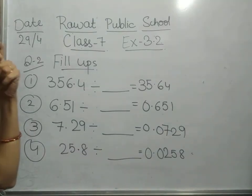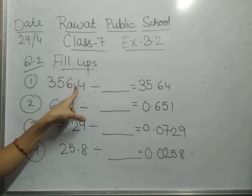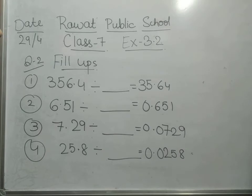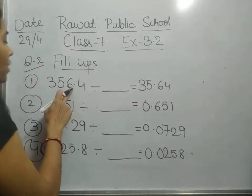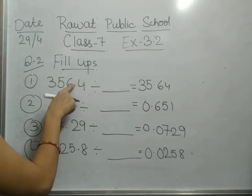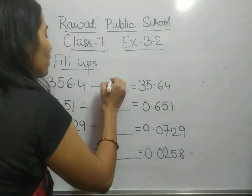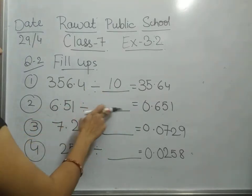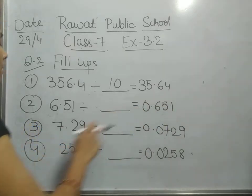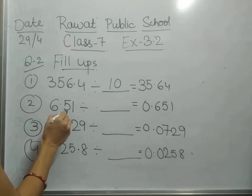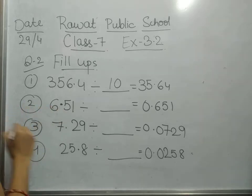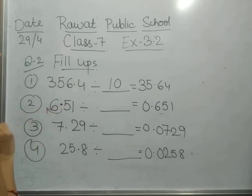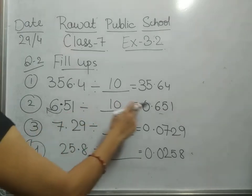Now we have to fill in the blanks. 356.4 should be divided by which number to get 35.64? You can see the decimal has shifted to the left by one position, so we divide by 10. Next, 6.51 should be divided by which number to get 0.651. The decimal is before two digits in 6.51 and before three digits in 0.651, so it has shifted one position to the left — divide by 10.